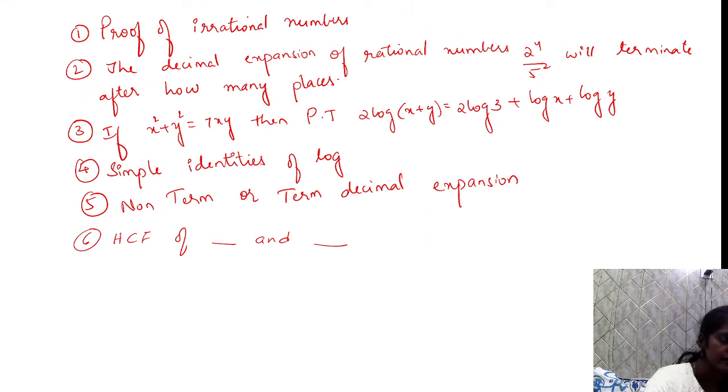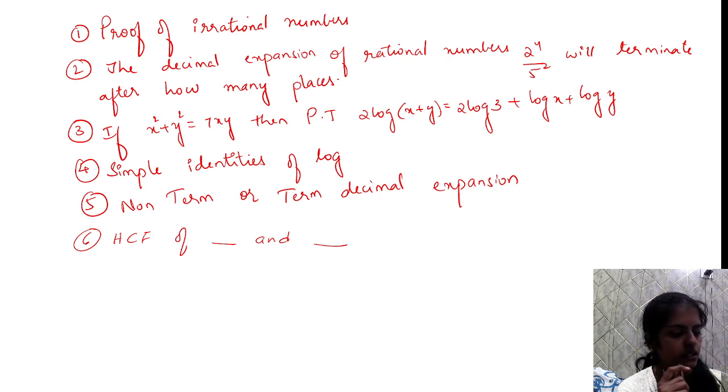So one more question in this chapter is proof of irrational numbers. Okay? Proof of irrational numbers: 6 marks and 4 marks. So 4 marks questions like this you will get.